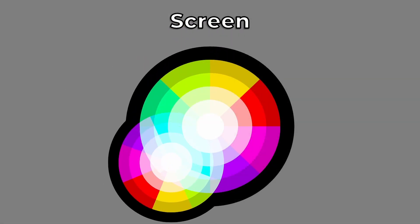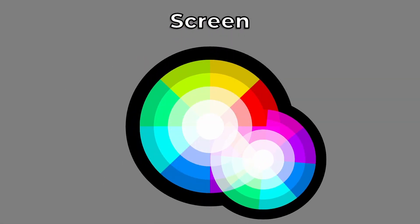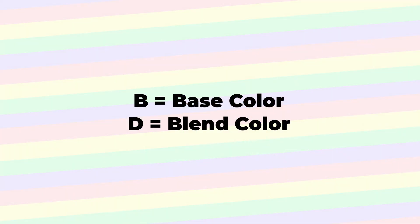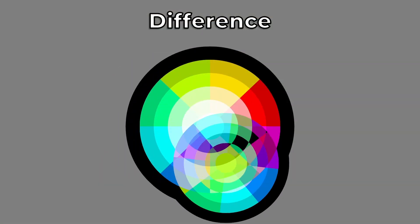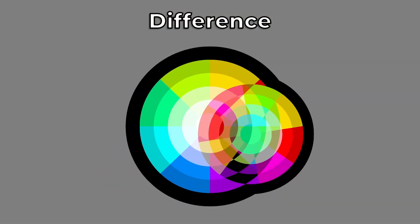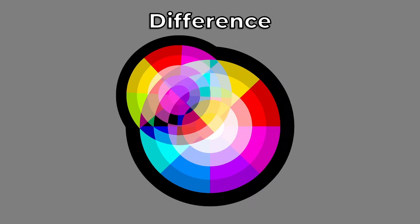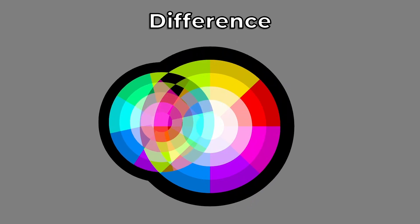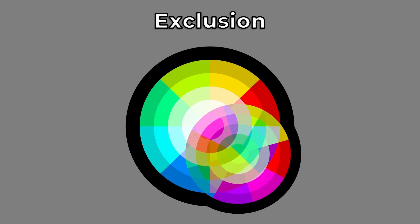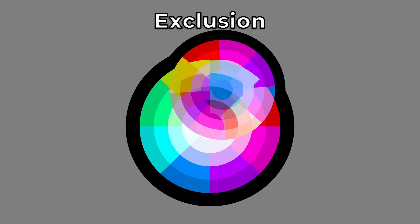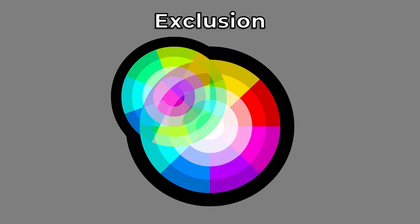Each blend mode has a math formula behind it. When showing the math on screen, I'll refer to the base color as B and the blend color as D. Also, keep in mind that when doing math on a color, it's treated as a vector with red, green, and blue components. Each of these components range from 0 to 1, where (0, 0, 0) is black and (1, 1, 1) is white.